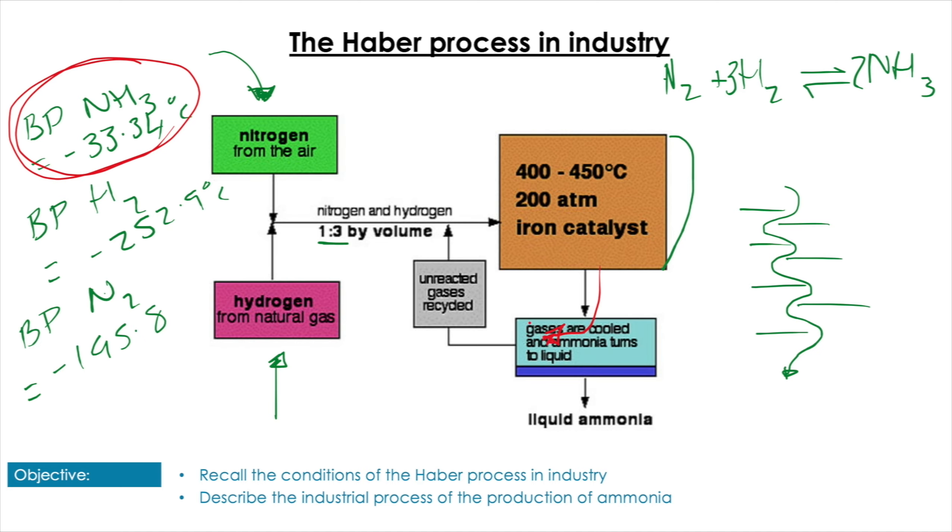So all we need to do is keep the temperature somewhere above -195.8 and below -33.4, and we will get liquid ammonia. We can tap that off and then we can recycle those unreacted gases back into the chamber. And so therefore it isn't as wasteful as it was initially seen.